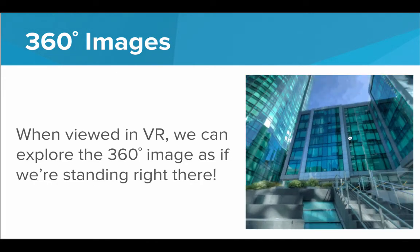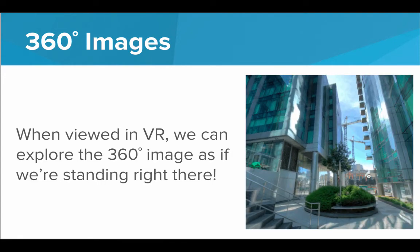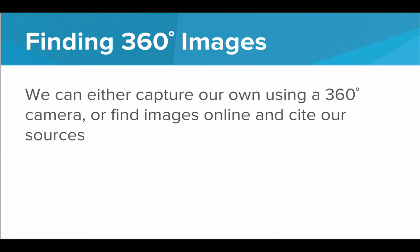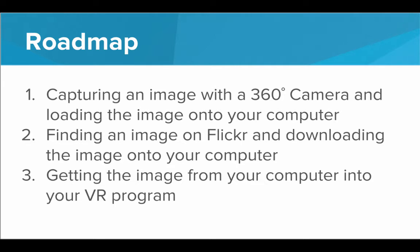In this video, we'll be talking about how to get these 360 degree images into our VR worlds and play around with them. First, we'll need to find a 360 degree image to use — either by capturing our own with a 360 degree camera, or by finding images online and citing our sources. The roadmap is: first, capturing an image with a 360 degree camera; second, finding an image on Flickr; and third, getting that image from your computer into your VR program.